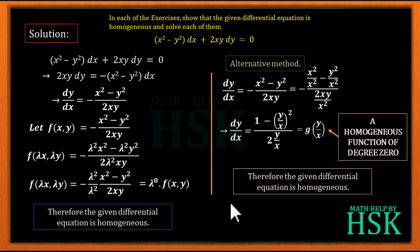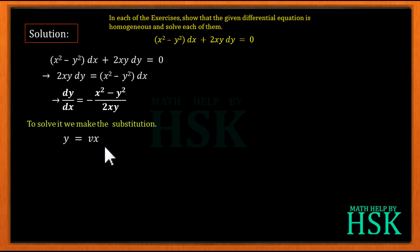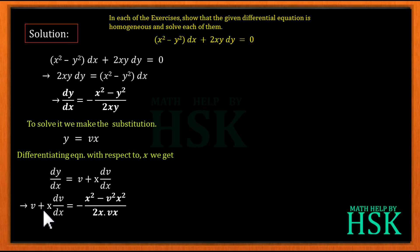Now we shall solve the differential equation. We have dy/dx equal to minus (x² minus y²) upon 2xy. To solve a homogeneous differential equation, we use the substitution y equals vx. On differentiating with respect to x, we get dy/dx equal to v plus x·dv/dx. Substituting, we obtain v plus x·dv/dx equals minus (x² minus v²x²) upon 2x·vx.